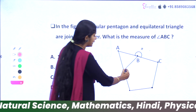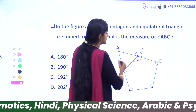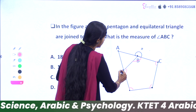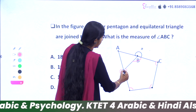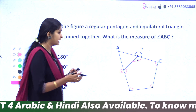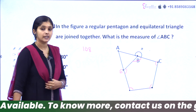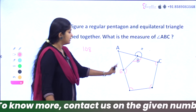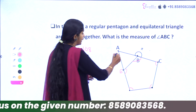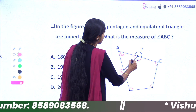The angle of the regular pentagon at that vertex would be the same. This angle is E-B-C. The interior angle of a regular pentagon is 108 degrees. The equilateral triangle has an angle of 60 degrees.